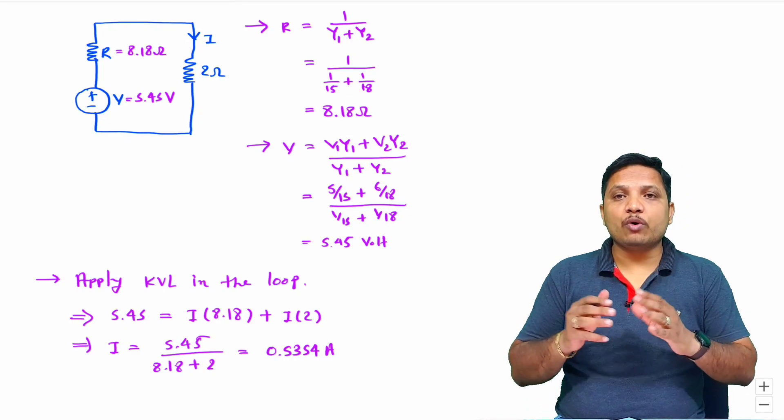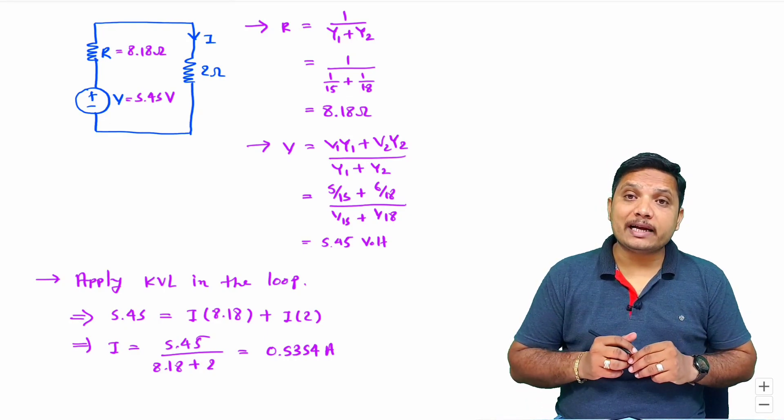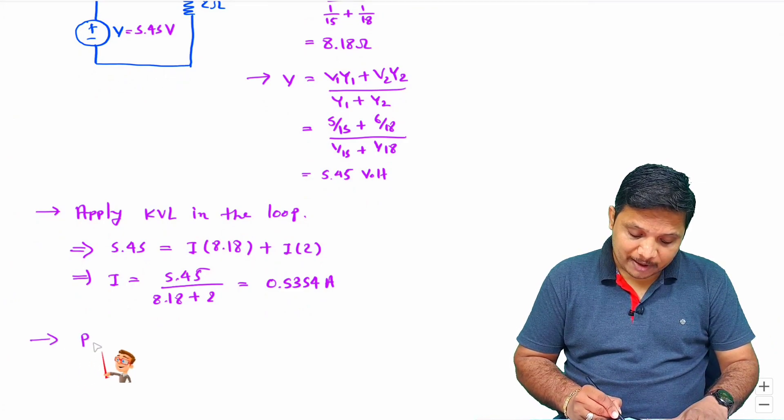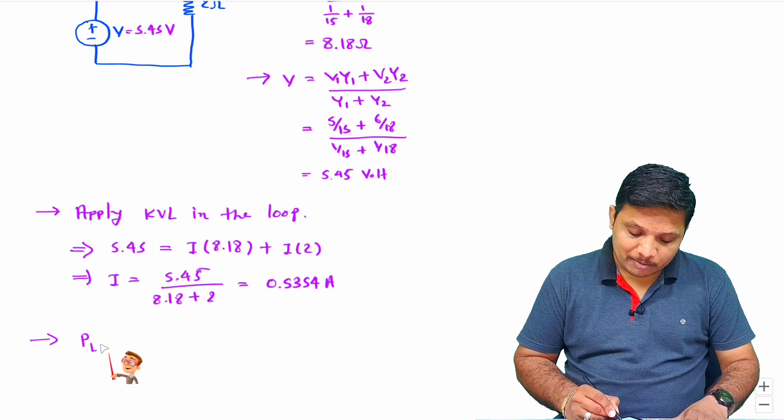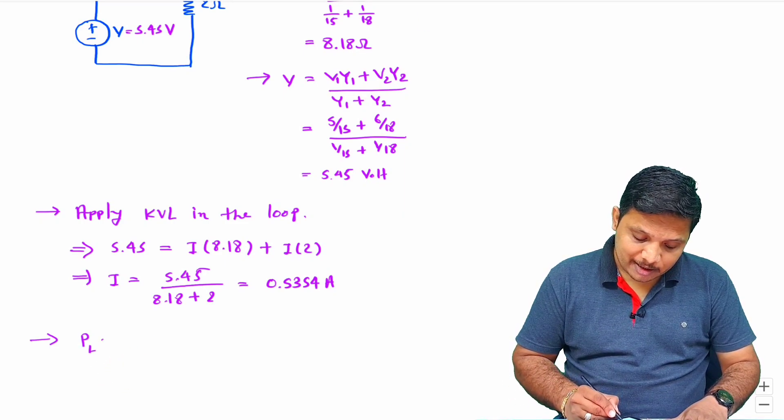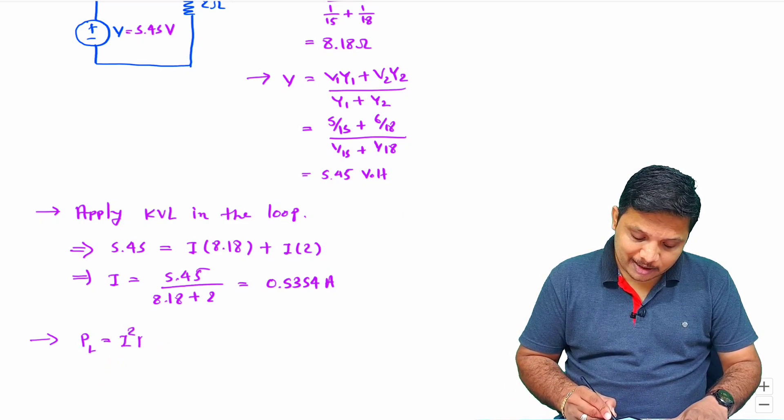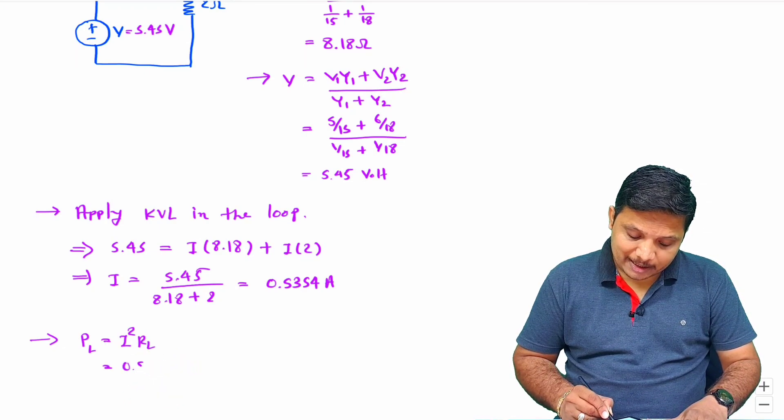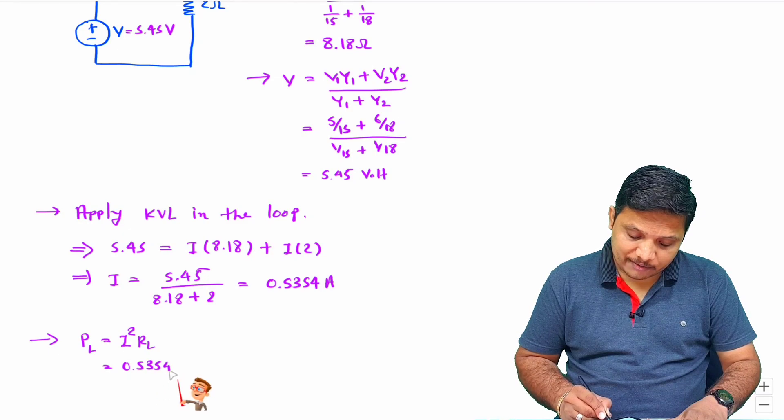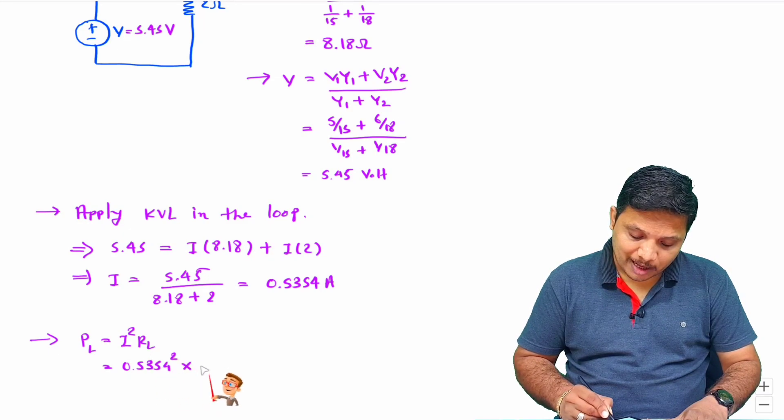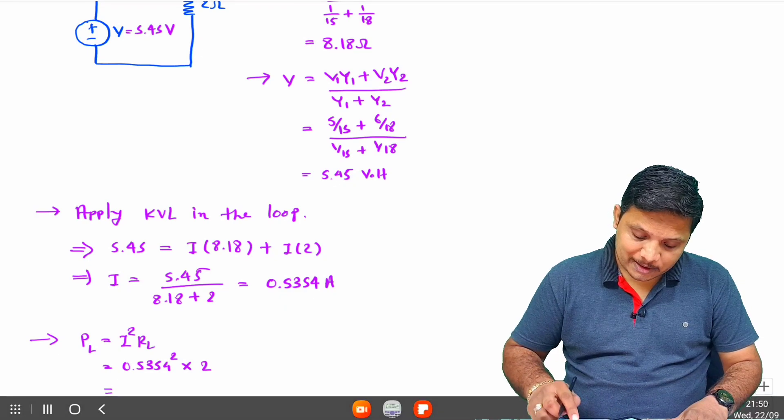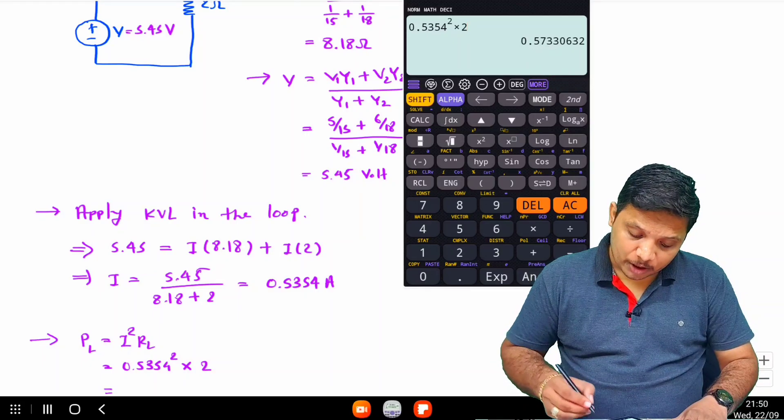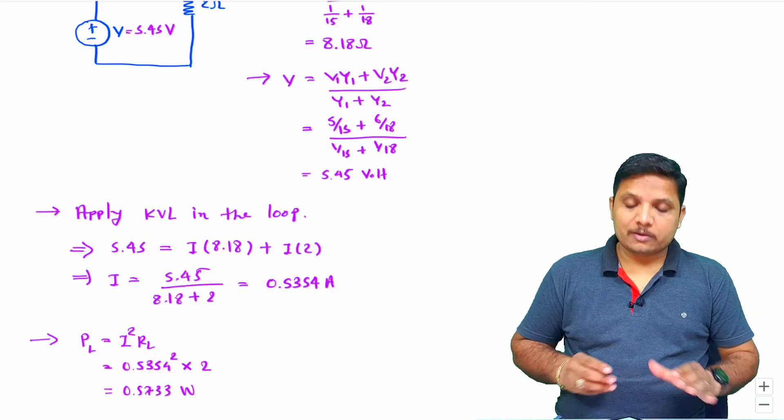Now if you want few more parameters like how much power is getting dissipated, I can solve it. Power at load means at 2 ohm resistor will be I square RL, which is 0.5354 square into RL is 2. If you solve this, that will be 0.5733 Watt.